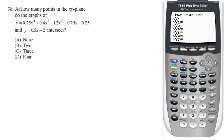We need to put in these two functions and then look for their points of intersection. So in order to put in a function, we're going to go to y equals and we're going to type in 0.25x to the 4th power plus 0.4x to the 3rd power minus 1.2x to the 2nd power minus 0.75x minus 0.25.